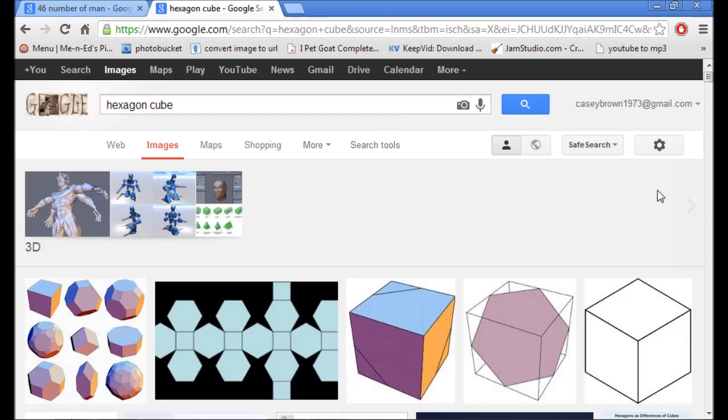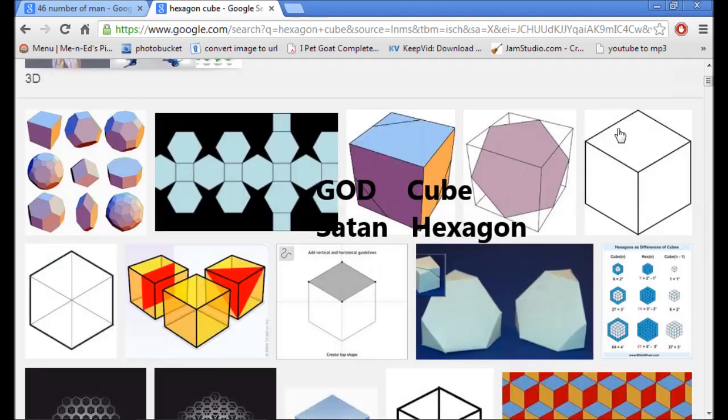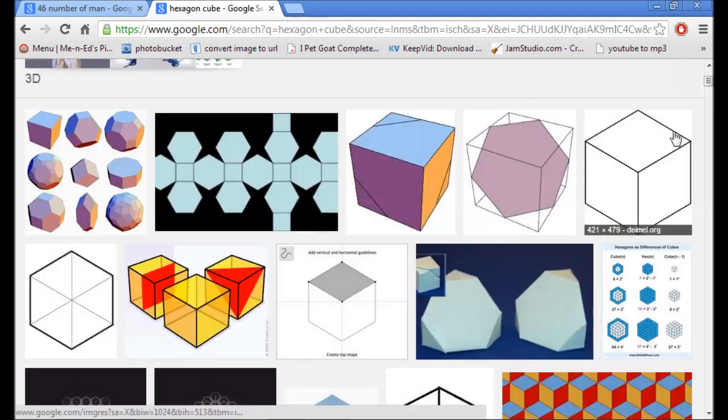A cube is perfect. This is God, down to the dimensions of the cube going into 3D. This is on the north pole of Saturn, as many of you have already discovered. The devil has taken this and he's used the hexagon as the mockery to God. If you count the sides of this cube, you see six.